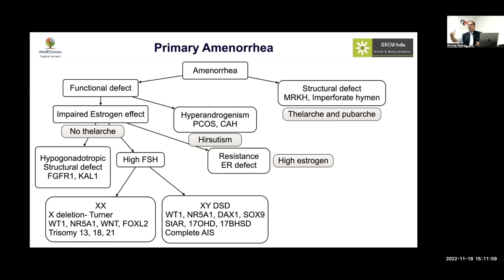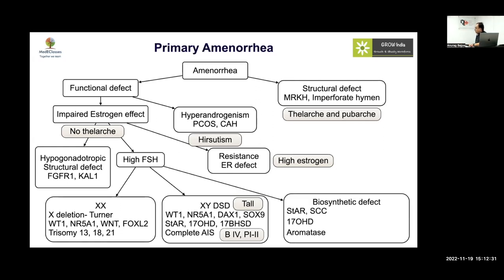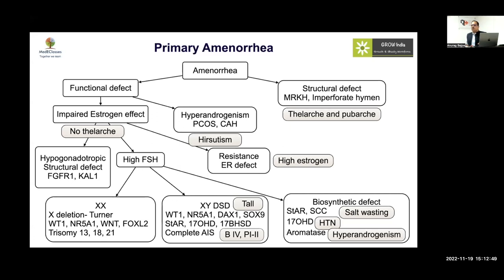High FSH (hypergonadotropic hypogonadism) can be due to XX DSD or XY DSD — remember XY DSD can manifest with a female appearance if the testes are damaged or absent. The characteristic feature will be tall stature. Complete androgen insensitivity syndrome (CAIS) may also present as a girl with primary amenorrhea, good breast development but sparse pubic hair. Biosynthetic defects include proximal defects like StAR or side-chain cleavage causing possible salt wasting; 17-hydroxylase deficiency causing hypertension; and aromatase causing hyperandrogenism with tall stature.